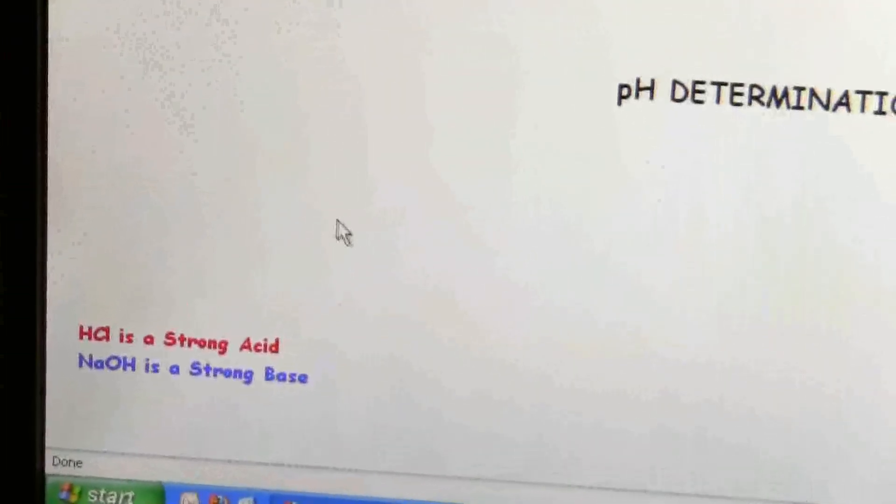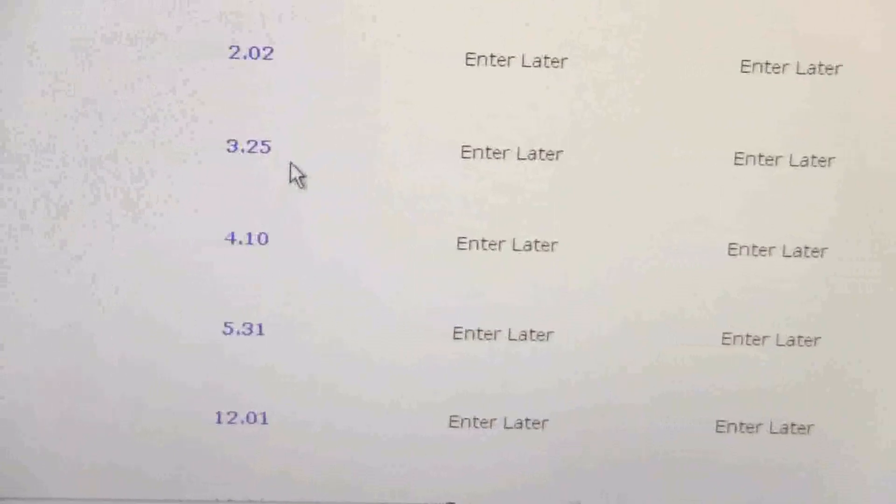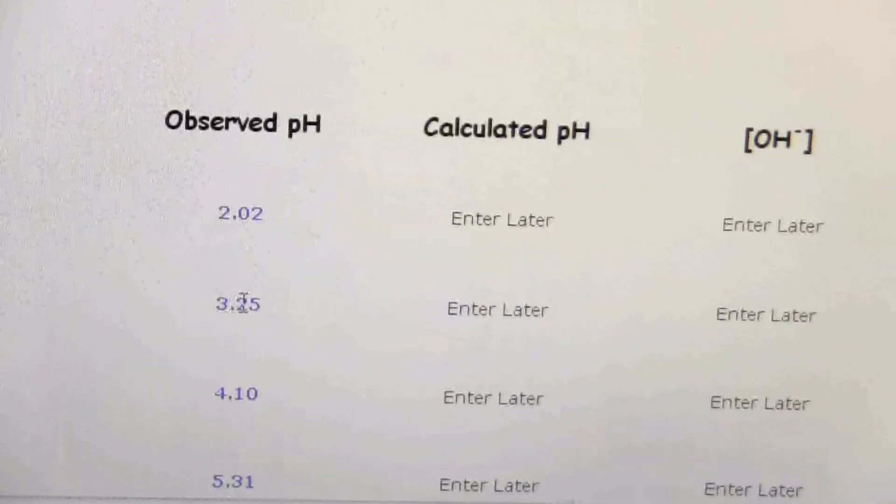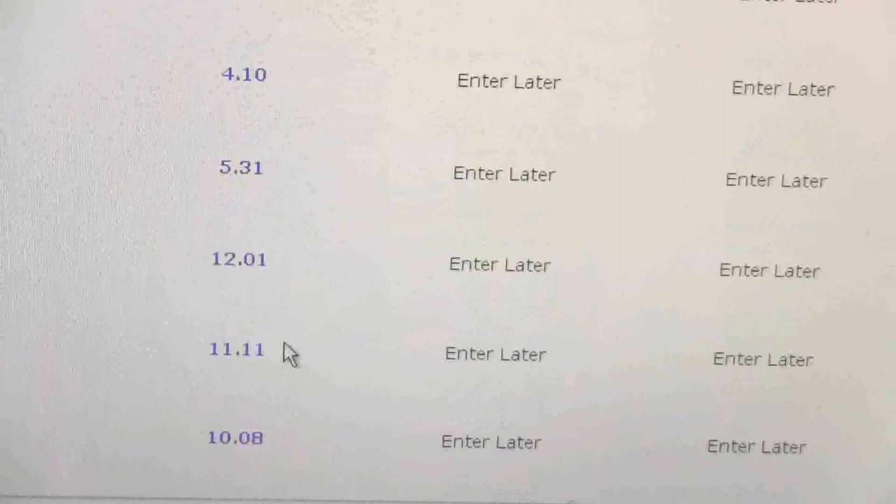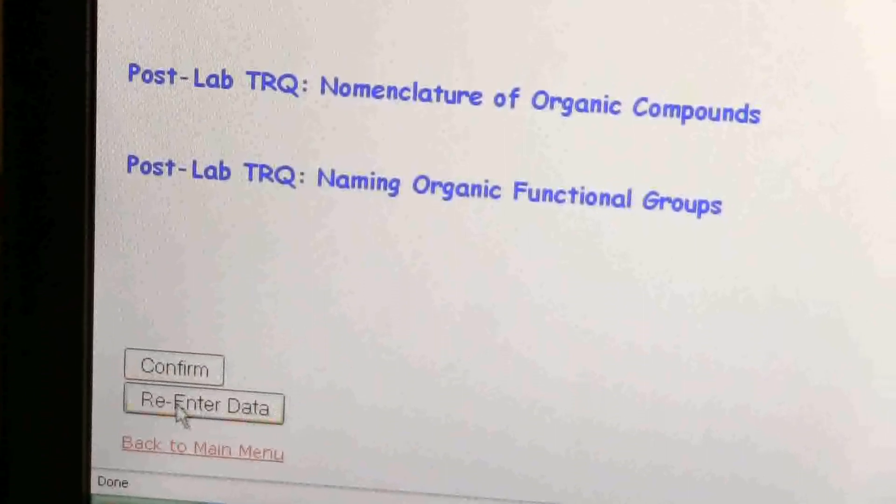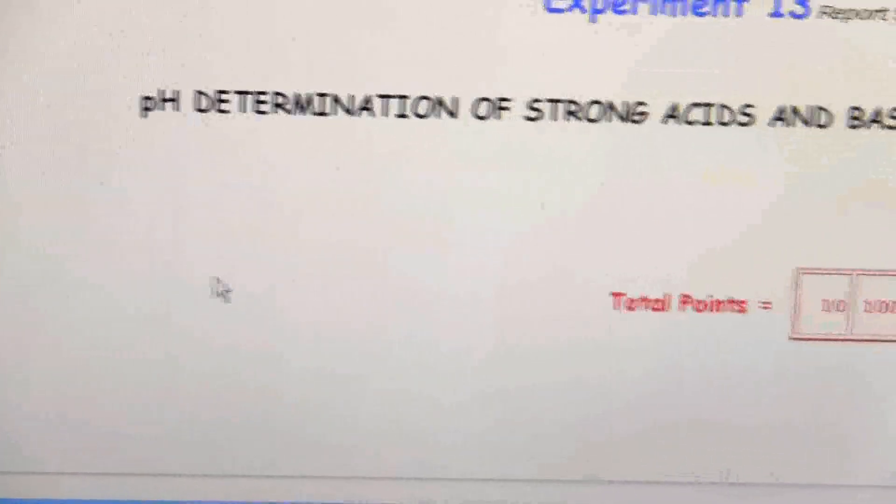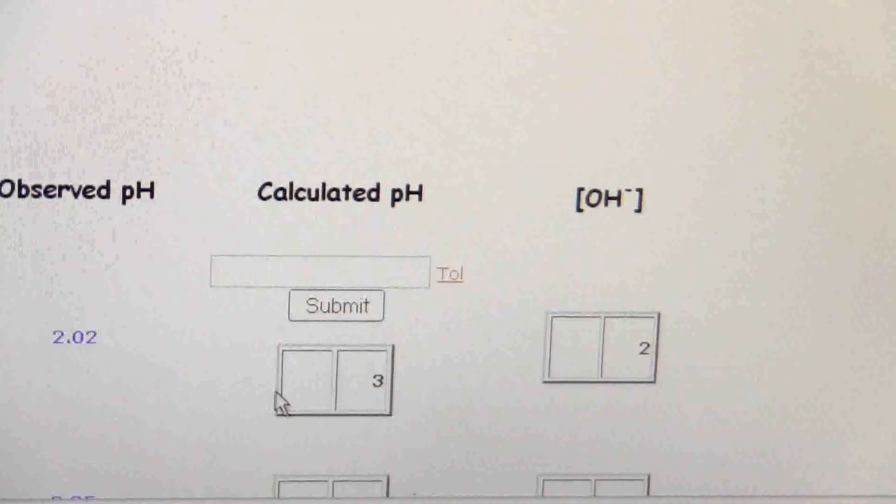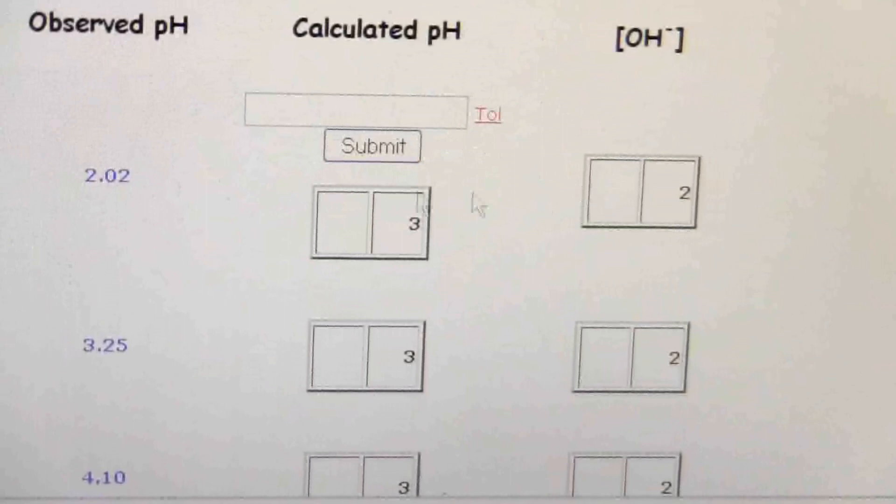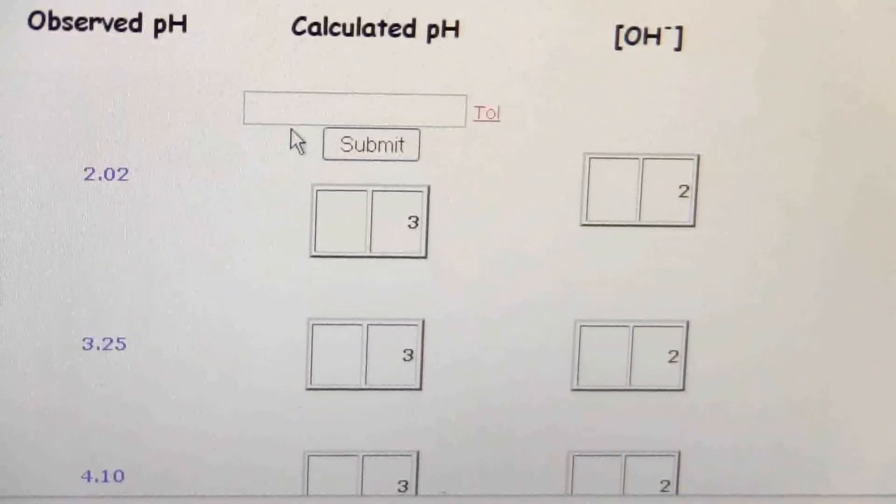So if I click continue there, now here is the data that I just entered and it wants me to confirm that. So I look at these, I verify them with my sheet and then down at the bottom it says confirm. Or if there's a problem with it then click on re-enter data. But if I click confirm now it lets me go to the calculation part and it'll open each one of those up separately.